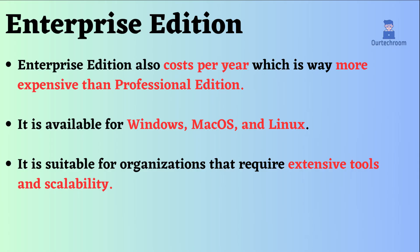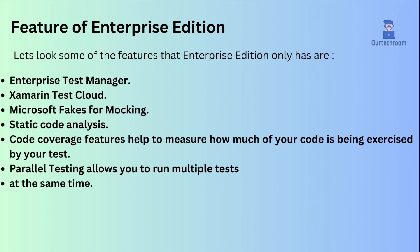Enterprise Edition also costs per year, which is way more expensive than Professional Edition. It is available for Windows, macOS, and Linux. It is suitable for organizations that require extensive tools and scalability. Some features that Enterprise Edition only has are: 1. Enterprise Test Manager. 2. Xamarin Test Cloud. 3. Microsoft Fakes for Mocking. 4. Static Code Analysis. 5. Code Coverage Features, which help measure how much of your code is being exercised by your tests. 6. Parallel Testing, which allows you to run multiple tests at the same time.